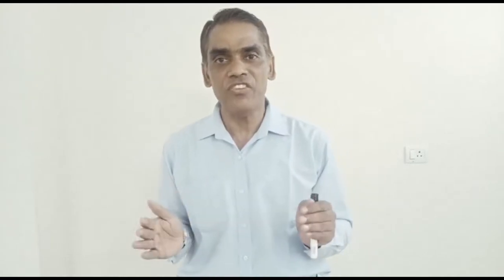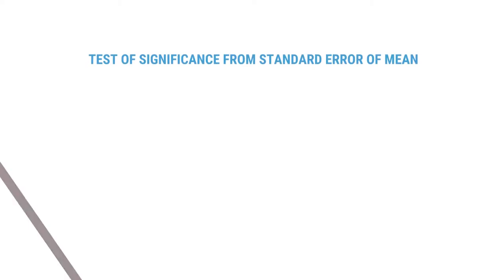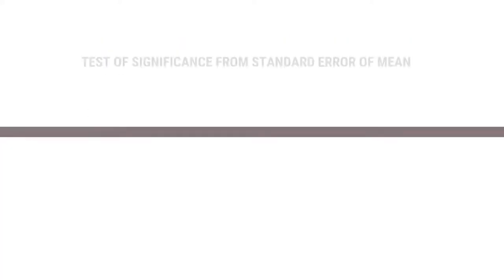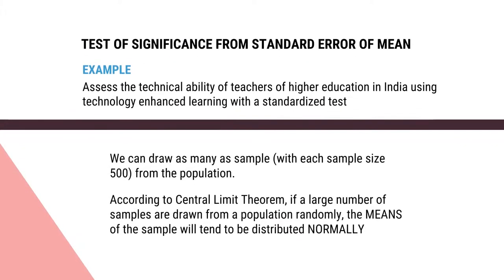Let us understand the concept with the help of the same example — assessing the technical ability of teachers working in higher education in India. Our sample size is 500, and our mean is 46. So 46 is the mean of the sample drawn from the population. We can draw as many samples with sample size 500 from the population. According to the central limit theorem, if a large number of samples are drawn from the population, the mean of the samples will tend to distribute towards normality.